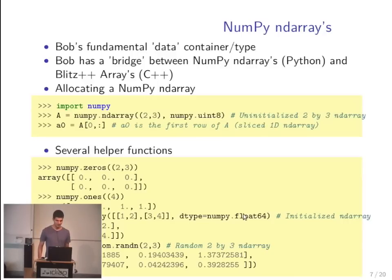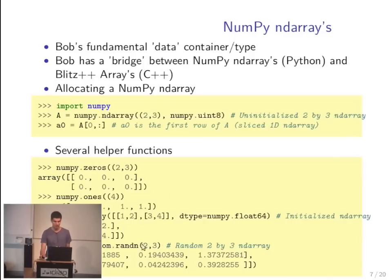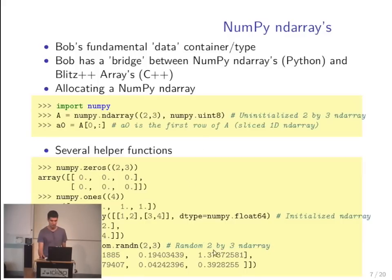If you want to force the type to be something different you can use dtype and set the type to float, for instance. Another feature we'll use is the random submodule of NumPy. If you want to generate a random 2x3 matrix whose content is drawn from a normal distribution — Gaussian with zero mean and unit variance — you call numpy.random.randn and provide the shape. It will generate a random matrix whose content follows that normal distribution.